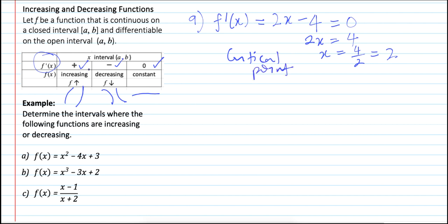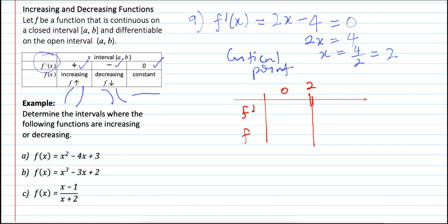Now we have to create a table with the critical point 2, and rows for f prime and f. Choose a number less than 2, for example 0. Substitute into f prime: 2 times 0 minus 4 equals -4, so we get a negative number. According to the table, if f prime is negative, f is decreasing. So from negative infinity to 2, f is decreasing.